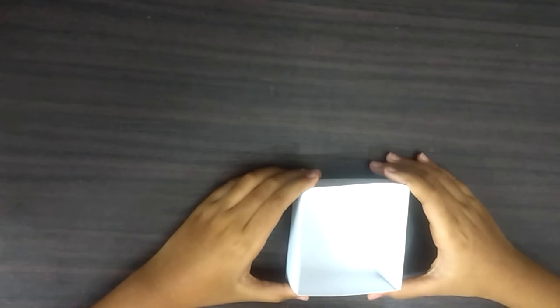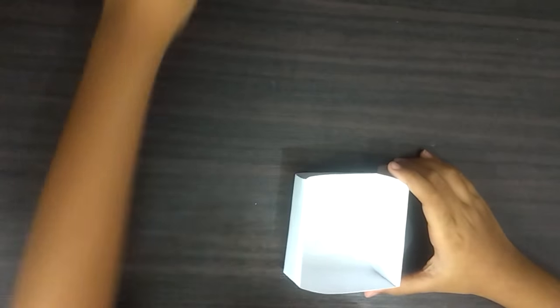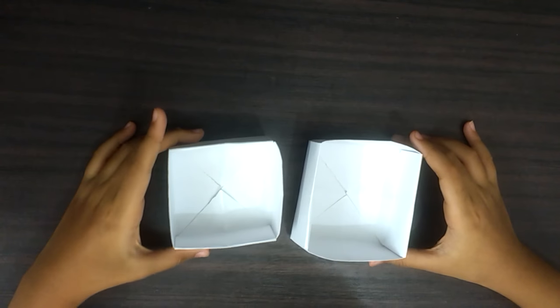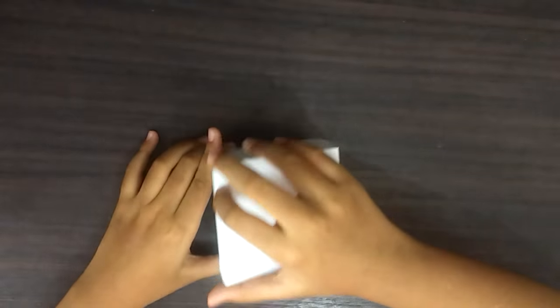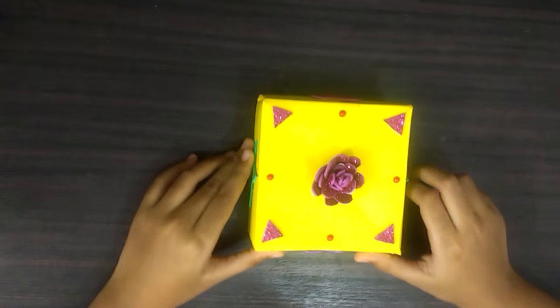Now, we are going to use the same method with the smaller paper. And we get the base of the box. The bigger one is the lid. We will close the box like you see over here.